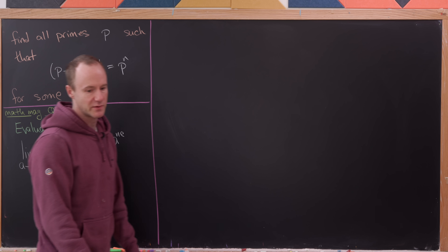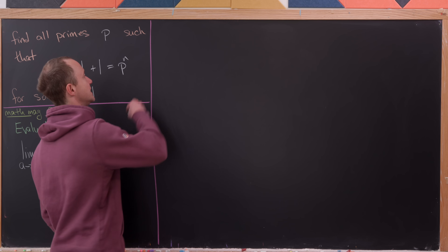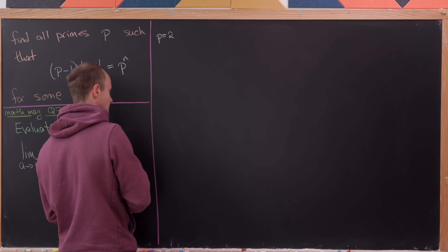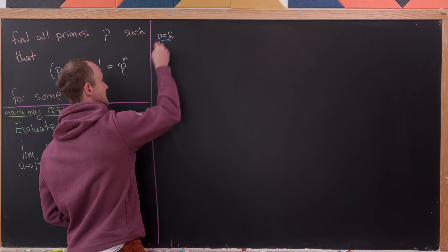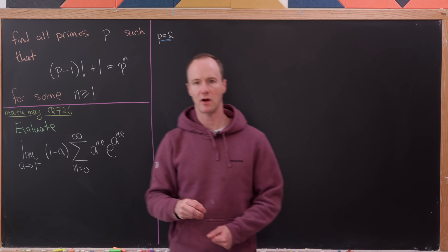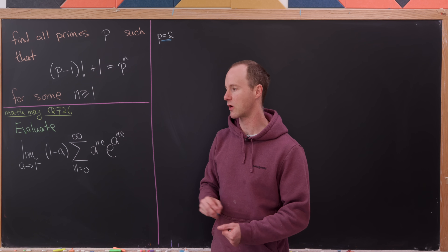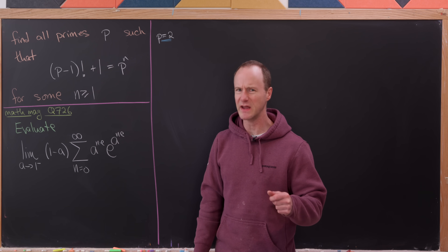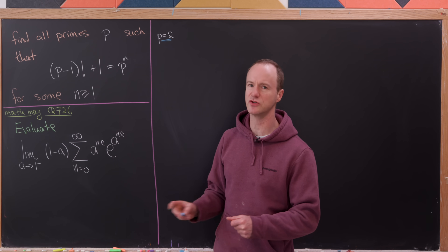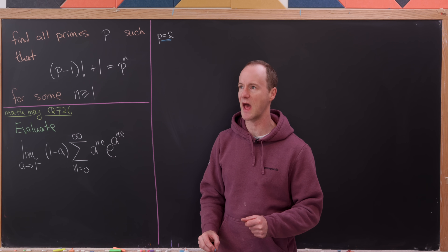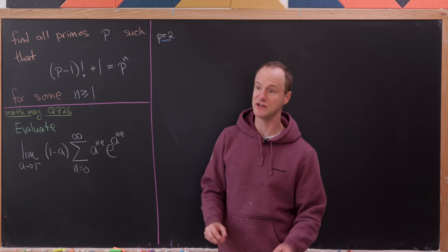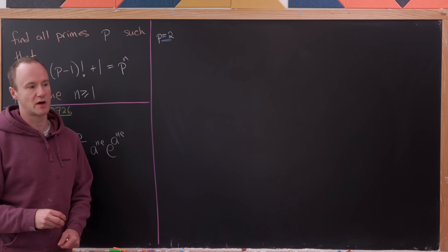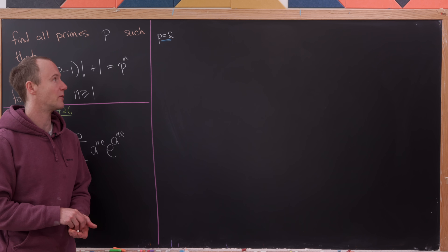The first thing to do is test a couple of small values of p, because often with these types of problems there are either no solutions or a couple of small solutions and then nothing after a point. It would be extremely weird if the only solution occurred at a three-digit prime. And what we'll see is we get a couple of small solutions and then nothing after a point.